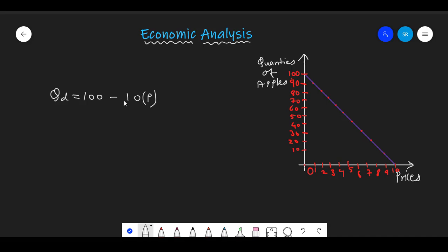This equation is written in the format quantity demanded is equal to a minus b of P. If you remember, we did a linear function which had an equation similar to this. A over here is 100 and b over here is 10.